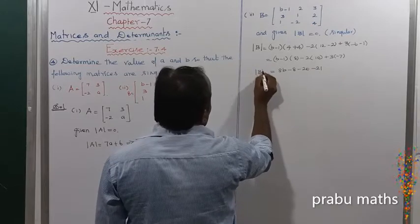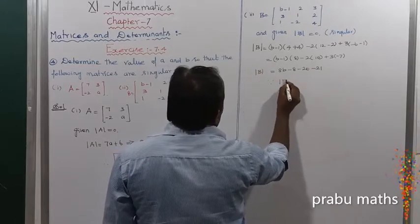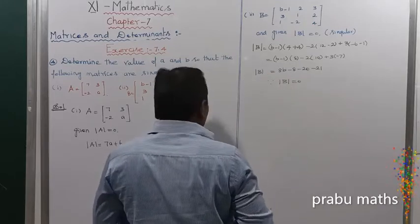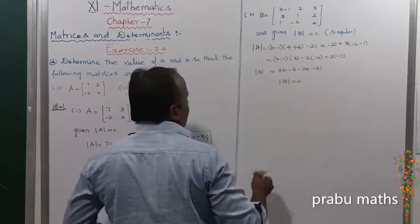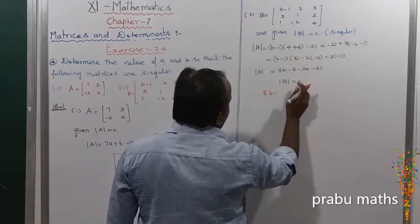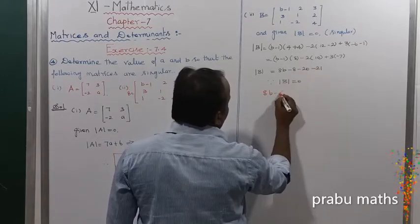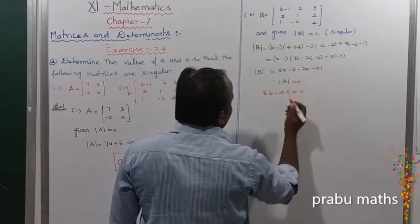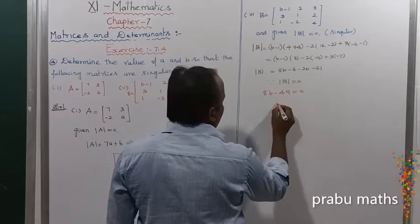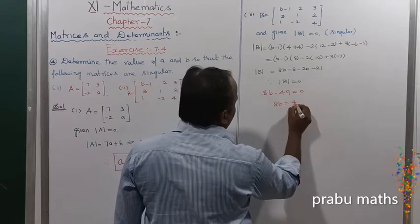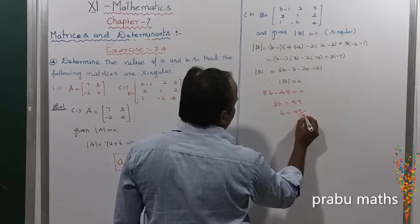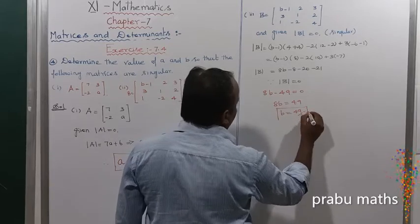This is the determinant of B. Since the modulus of B is equal to 0, applying modulus of B equal to 0, the remaining value: 8B minus 40 minus 49 is equal to 0, because the modulus of B is equal to 0. So 8B is equal to 49. Therefore B is equal to 49 divided by 8. That is the value of B.